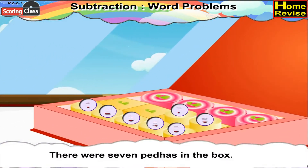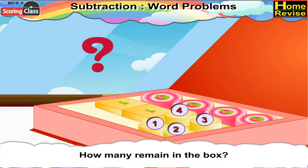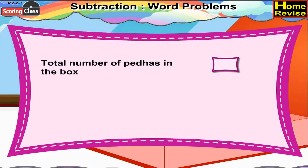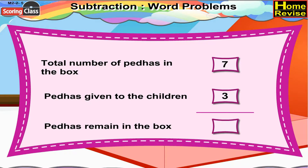There were seven peras in the box. Three peras were given to the children. How many remain in the box? Total number of peras in the box is equal to seven. Peras given to the children is three. So the peras remaining in the box would be seven minus three, that is four. So four peras remain.